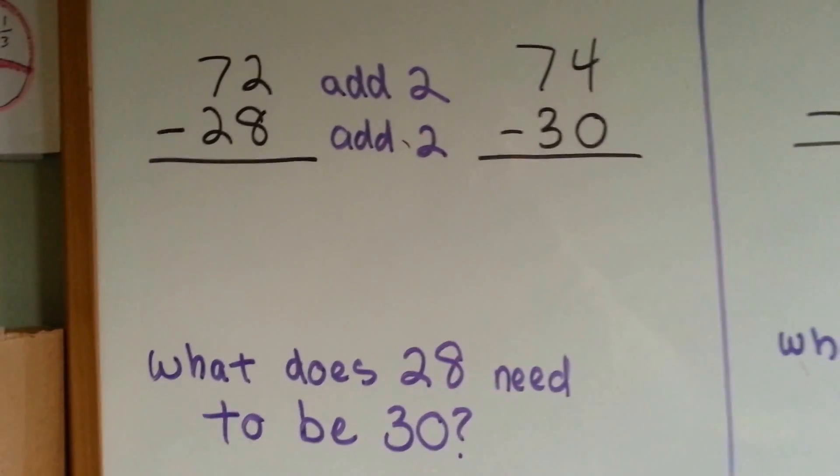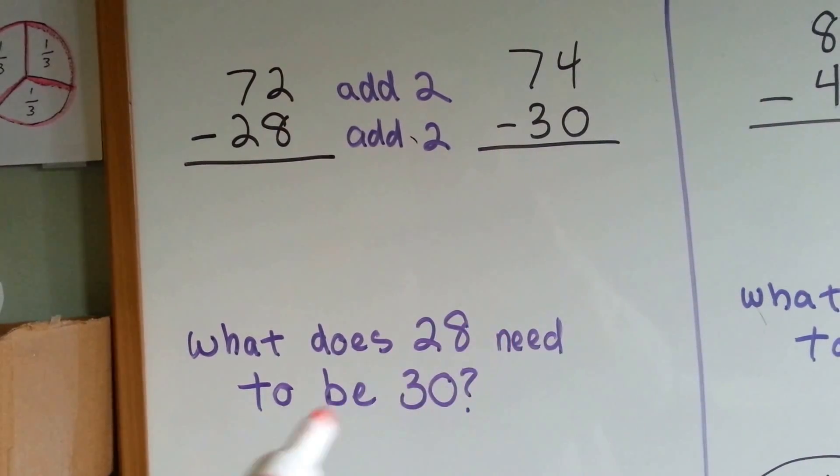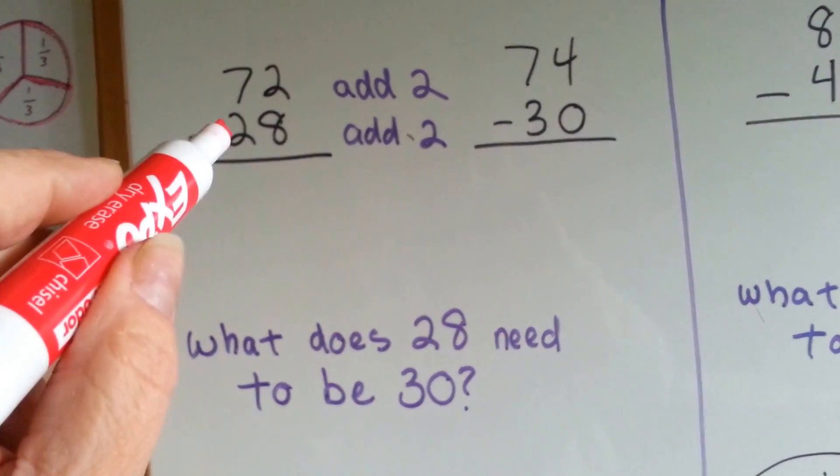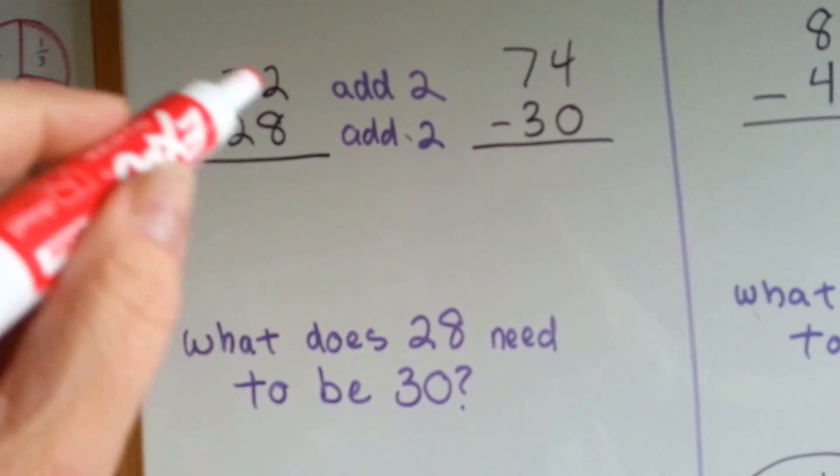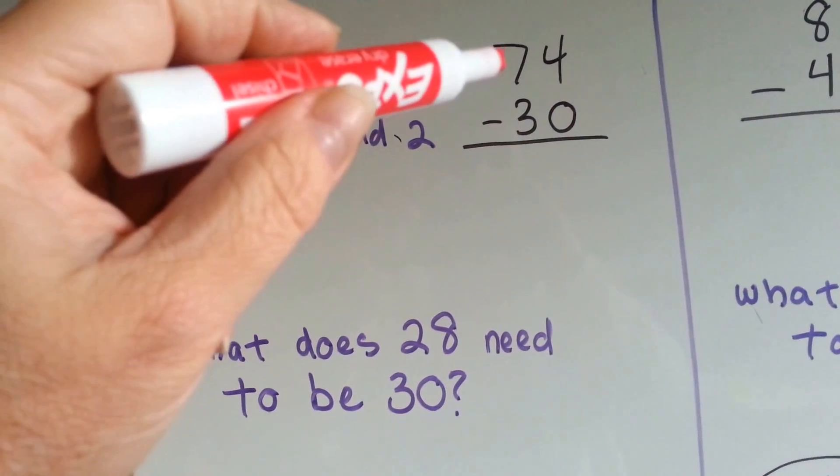So let's ask ourselves, 72 minus 28. What does 28 need to be 30, a friendlier number? You need to add 2. So you add 2 to the top one. So instead of 72 minus 28, you get 74.